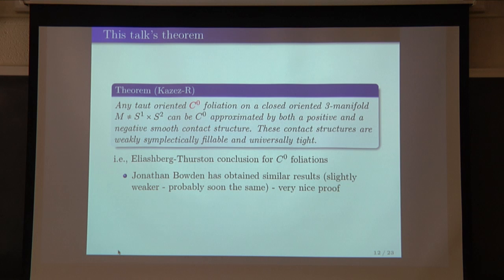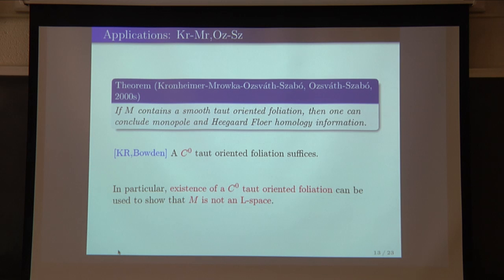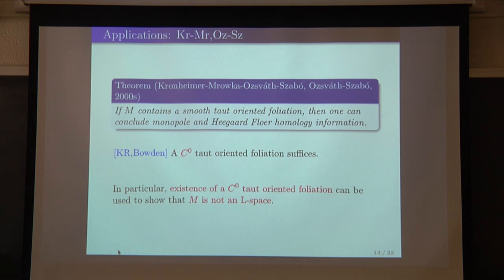One of the nice applications: we can use a foliation to show that a manifold is not an L-space. Many naturally constructed foliations are not smooth — they're only C0 — so we wanted to apply Oszváth-Szabó but initially couldn't. The result with Kazez says: it's sufficient to find C0 taut foliations. So if you want to use taut foliations to obstruct L-spaces, it suffices to find continuous foliations.